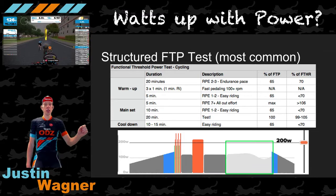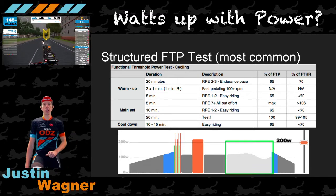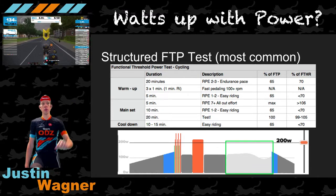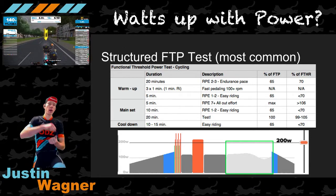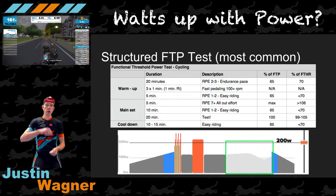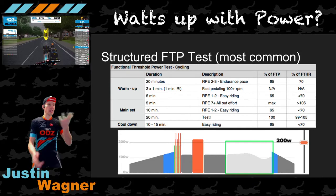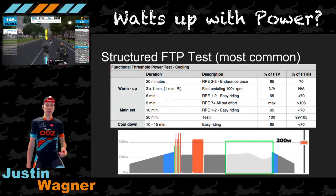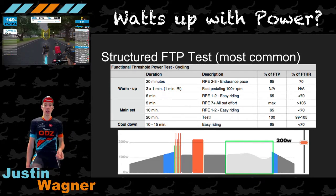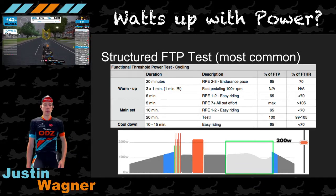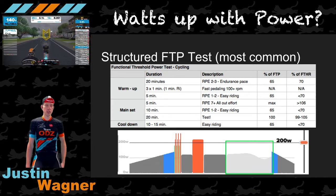If you go into the workout editor in Zwift and take that FTP slider and move it up and down, you're going to see all the bars get taller or shorter, because when people design these workouts, they describe them in terms of watts relative to your FTP — percentage of FTP rather than absolute watts.